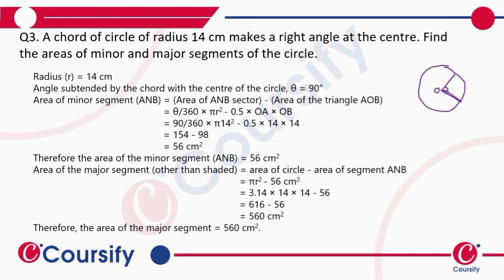We have to find the areas of the minor and the major segments, so we join these two points. The segment in which O lies is the major segment, and the other is the minor segment. If this angle is 90 degrees, then the remaining angle will be 360 minus 90, which is 270 degrees.